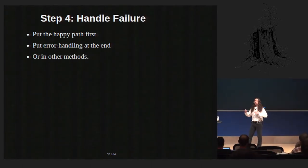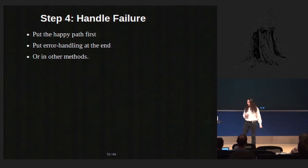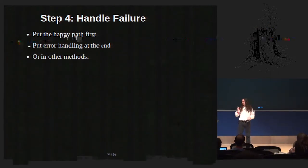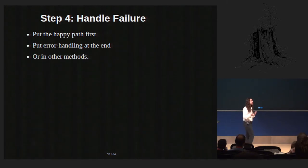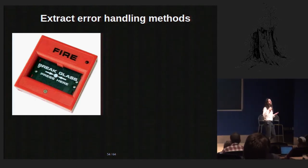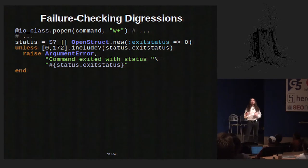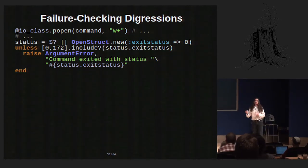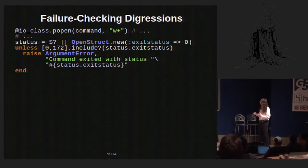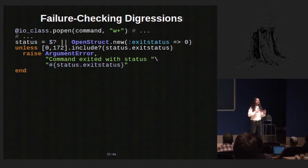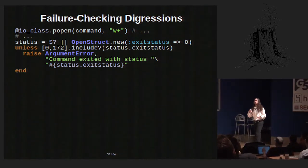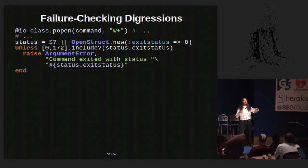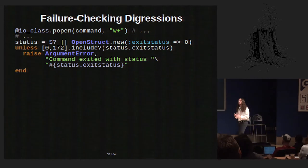The final step in these four parts of a method is handling failure. Here I just want to say: if you can, try to put the happy path — the expected business logic — first, and then put the error handling at the end, or try to extract it out to other methods. This is an example of what I don't like to see: a failure-checking digression right in the middle of code. We run this process and then immediately we have to check for an error status before we move on. It interrupts the narrative flow of that method to talk about something that actually doesn't happen that often — it's very disruptive to the reader.